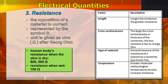A trivia: the human body resists electricity at 500,000 Ohms when the skin is dry, but only 100 Ohms when the body is wet. Resistance can be solved using the formula R = ρ × L / A (rho times length over area).